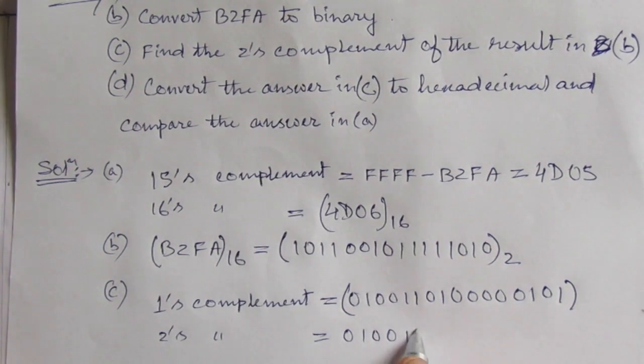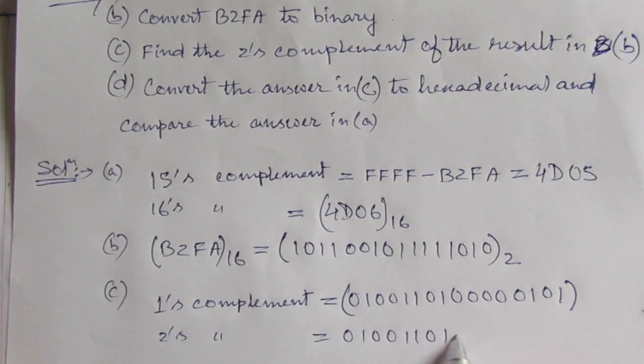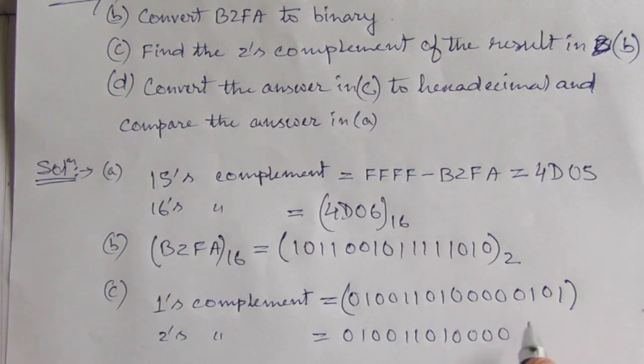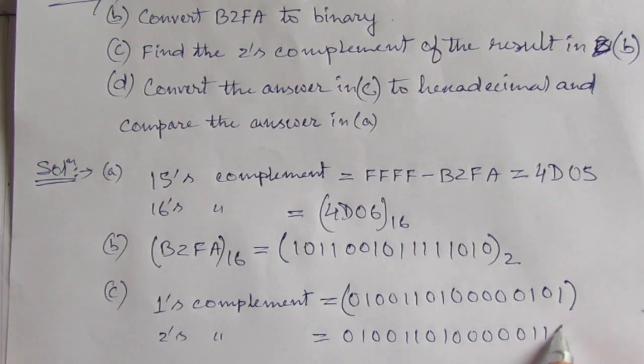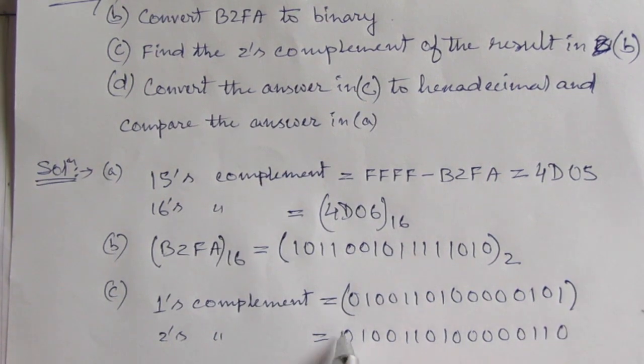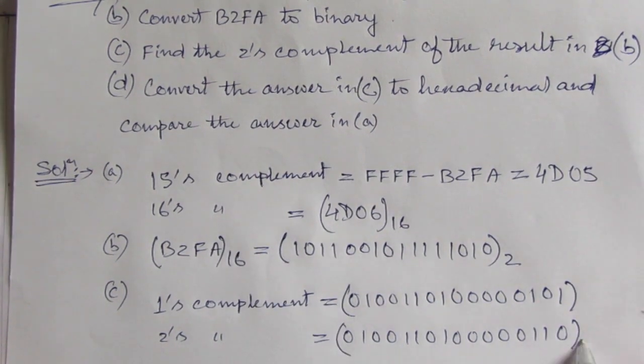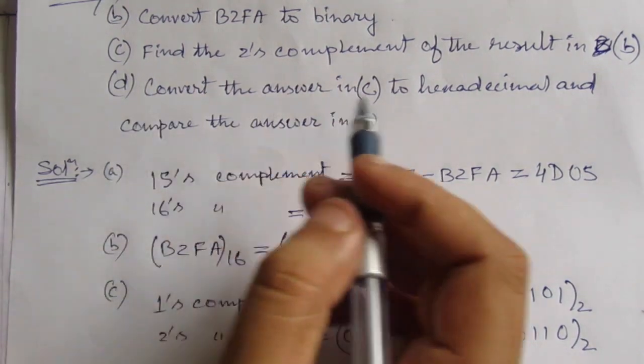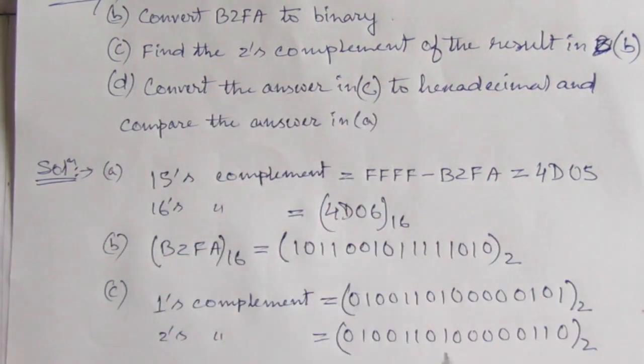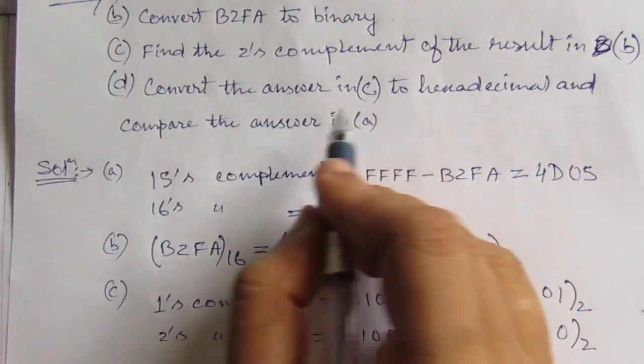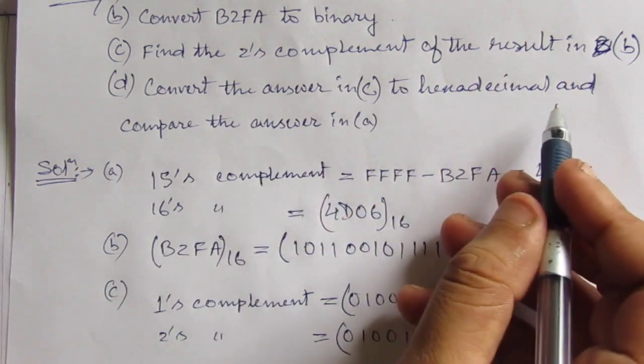Now let us add 1 to this number and we will get the 2's complement. 2's complement will be 0100110100000110. Because it will be 1 plus 1, it will be 2. So this is the 2's complement in binary. Now the next part is convert the answer in C. This is the answer in C.